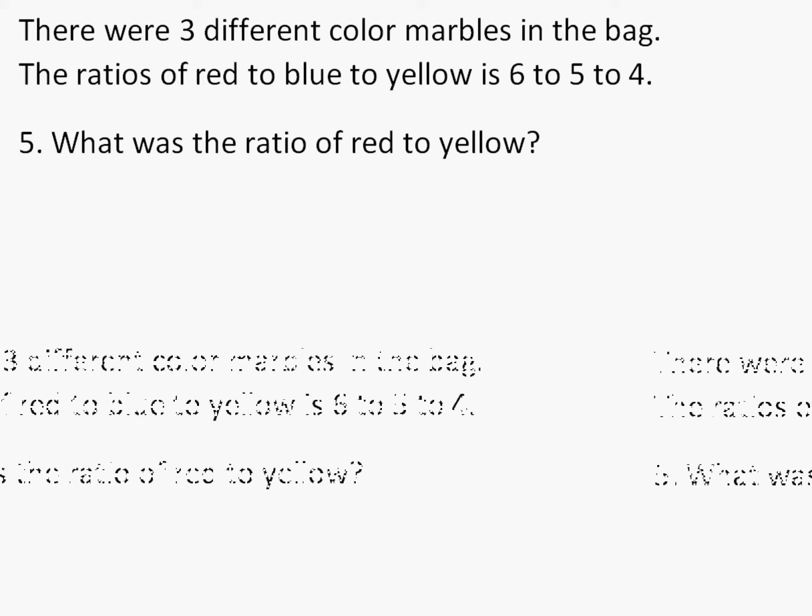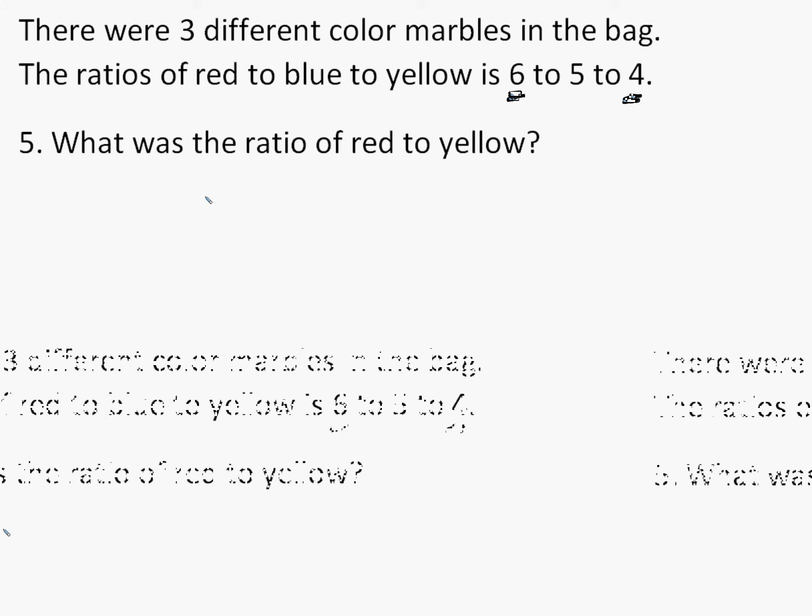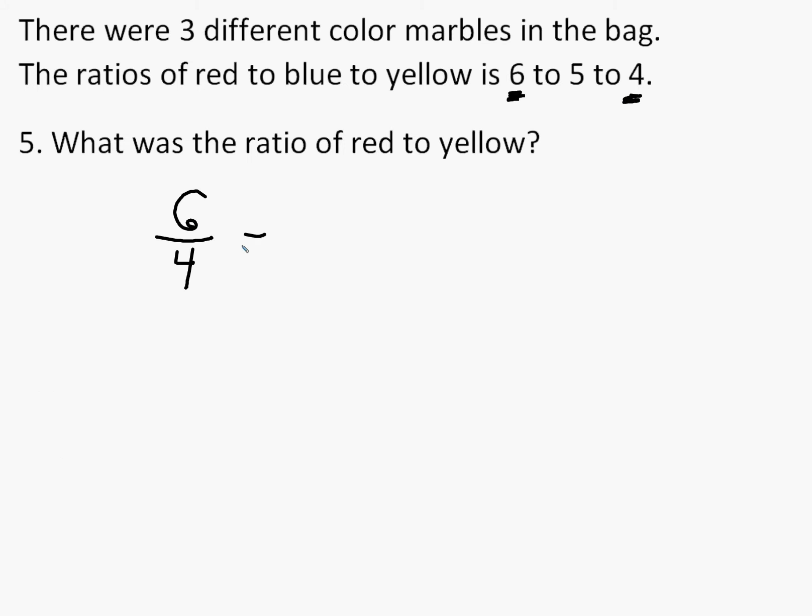Our next one says the ratio of red to yellow. Red to yellow, well, that's probably a little simpler than the first one. Here's our red compared to our yellow. So we can say, well, that is 6 to 4. And again, we want to reduce that. We can reduce by 2, and that's 3 over 2. So our ratio of red to yellow is 3 over 2.